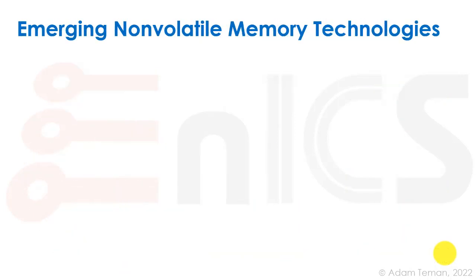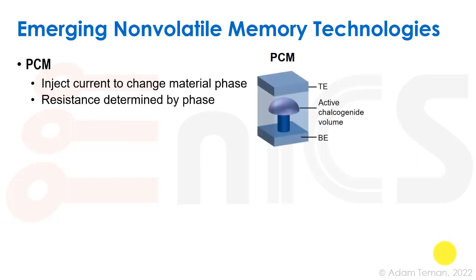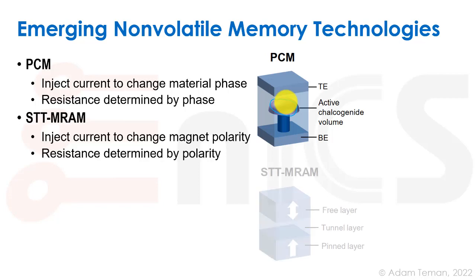I'll now quickly cover the four leading candidates for emerging non-volatile memory technologies. The first is PCM or phase change memory. We inject current to change the material phase, and resistance is dominated by phase. A bit cell looks like a little mushroom, and depending on the state of this mushroom — the phase — we have either high or low resistance.